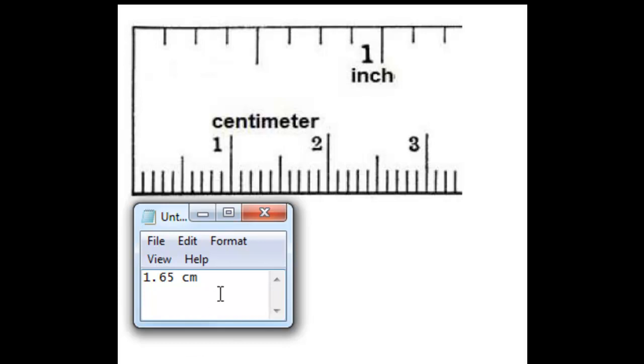So in all the measurements you do for this lab, you should, depending on the ruler you have, always estimate the last digit of precision that is sort of smaller than your smallest increment. I know that's confusing, but hopefully that makes some sense.